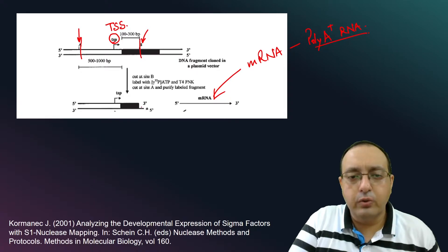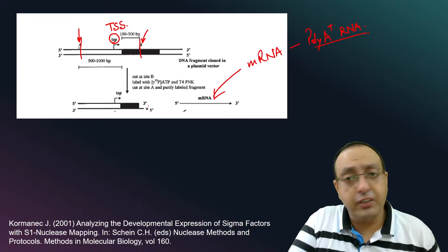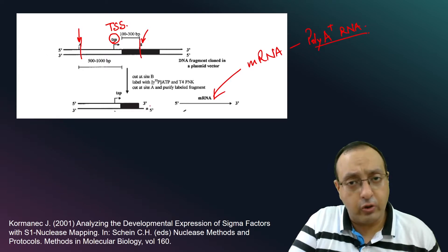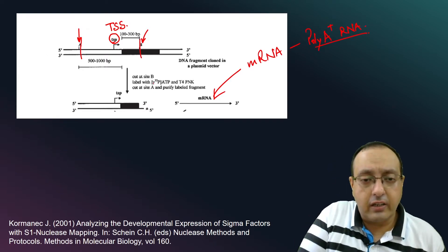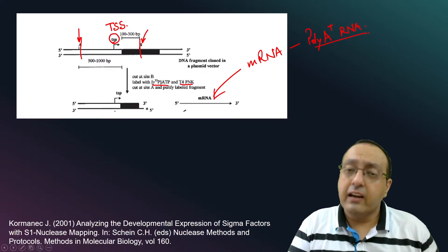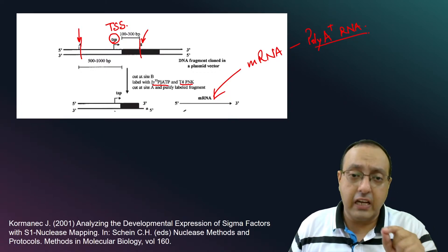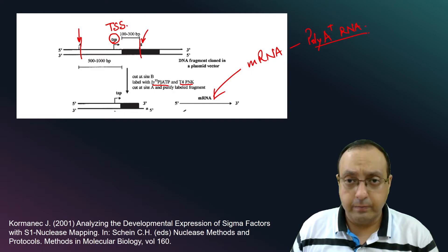And then what we do is we use gamma P32 ATP and T4 polynucleotide kinase. So that's written here, T4 polynucleotide kinase. And this will label the DNA fragment at the five prime end.